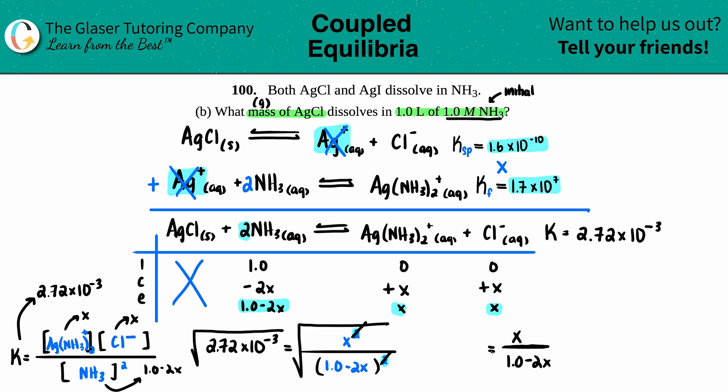Now we have x over 1.0 minus 2x because that got rid of the exponent on both sides. Let's take the square root of 2.72 times 10 to the negative third. It's a long decimal, so I'll keep as much as I can: 0.052154, that's good enough.